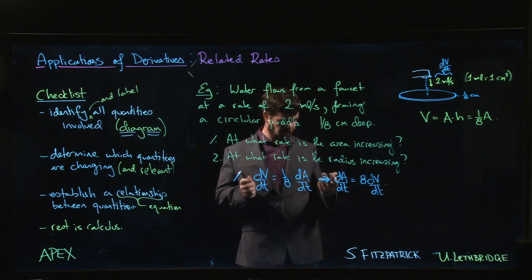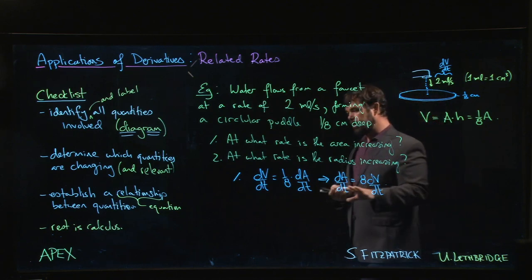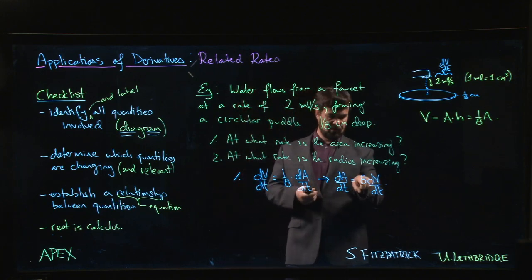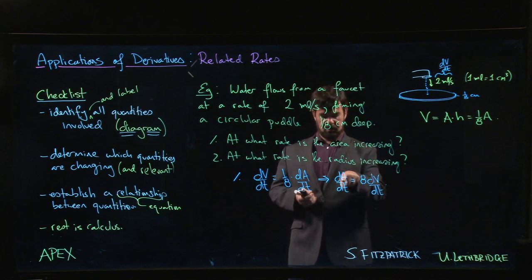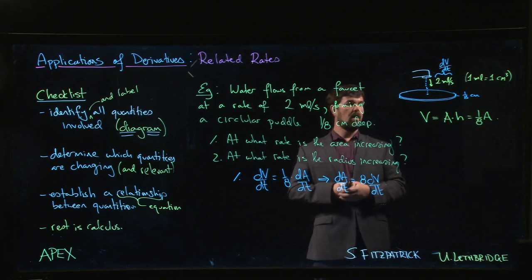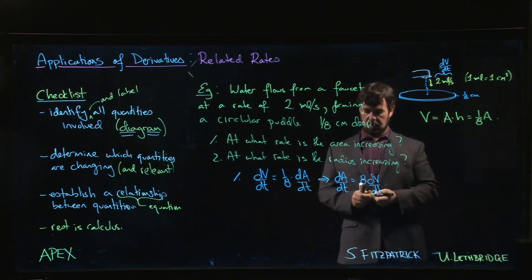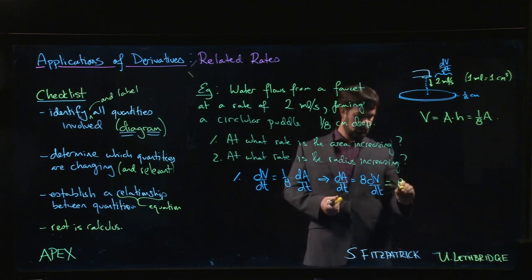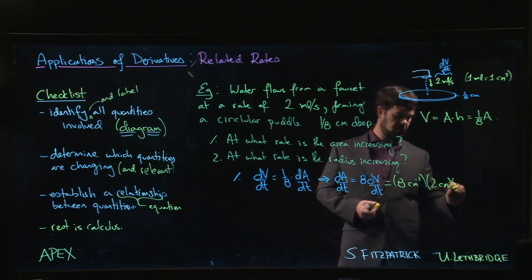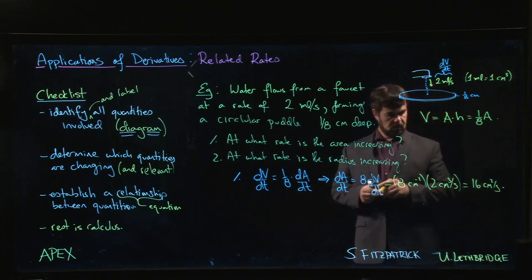The rate at which the area is changing is eight times the rate at which the volume is changing. We don't necessarily bother to put units in right away. This one over eight is one over eight centimeters, so this becomes eight centimeters to the minus one. Area is in centimeters squared, volume is in centimeters cubed, and it works out. We generally just put the units in at the end. Water is flowing in, volume is increasing, so the rate should be positive. It's eight centimeters to the minus one times two cubic centimeters per second, giving us a rate of sixteen square centimeters per second at which the area is changing.